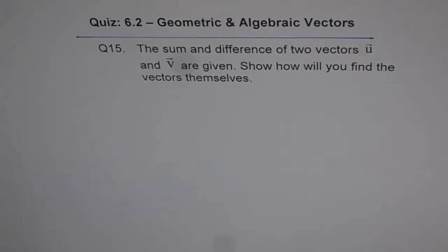I'm taking up question number 15 from quiz 6.2, which is regarding geometric and algebraic vectors. The question is: the sum and difference of two vectors u and v are given. How will you find the vectors themselves? I'm changing this question a bit to make it interesting. I want you to solve this both geometrically and algebraically. So give me two solutions for this problem.